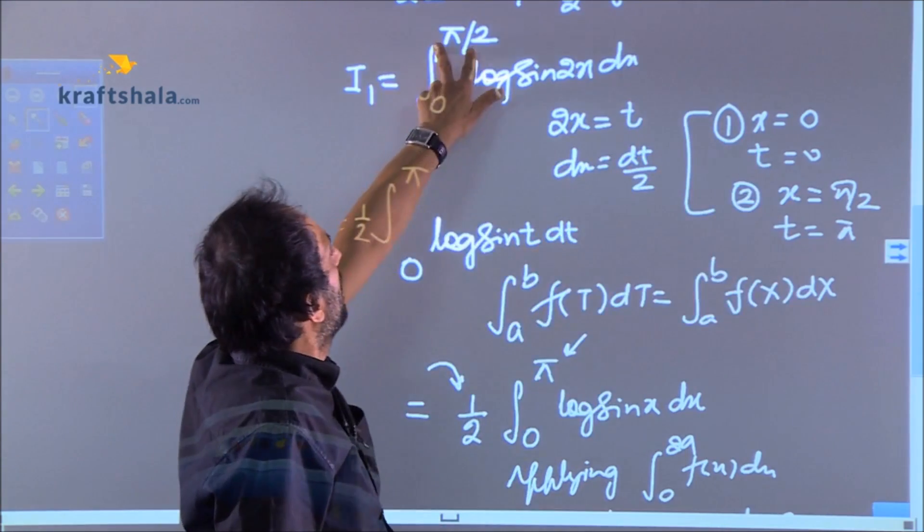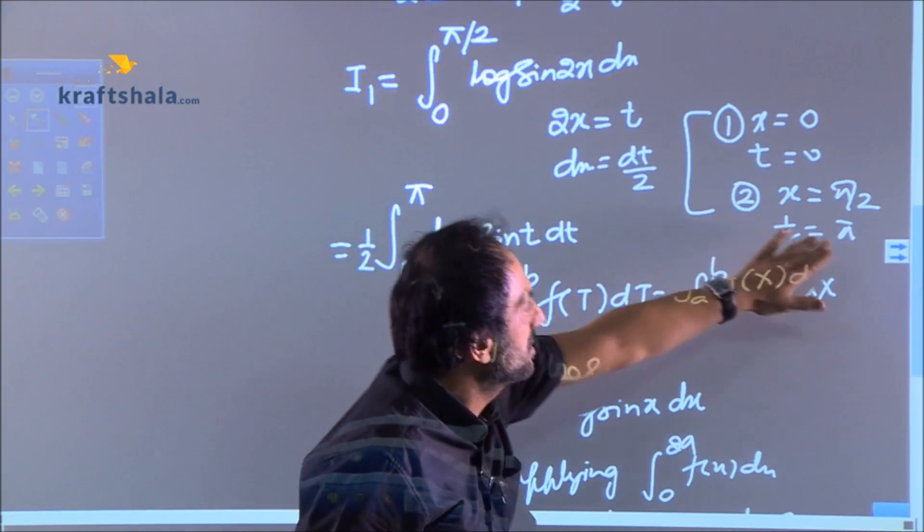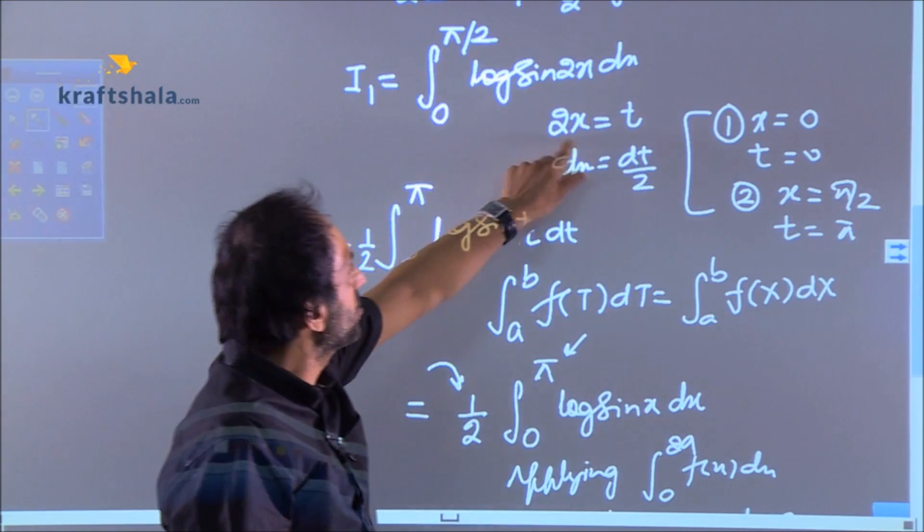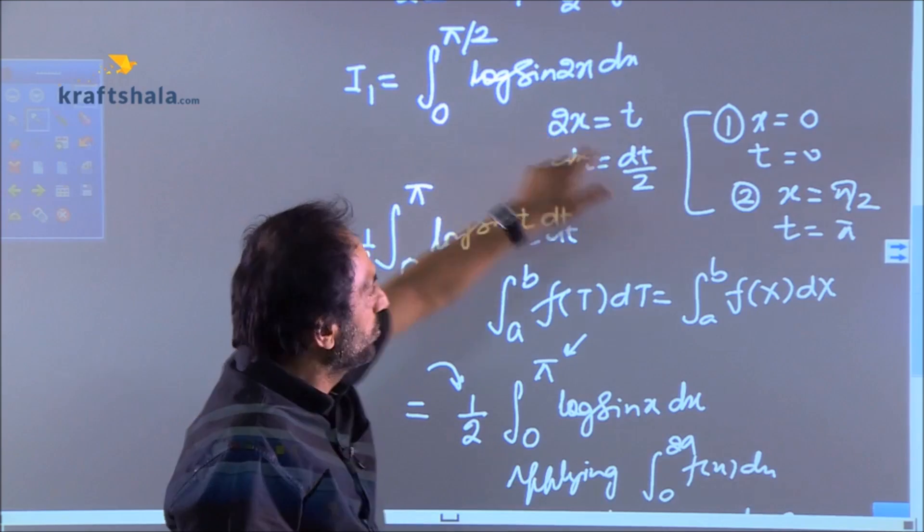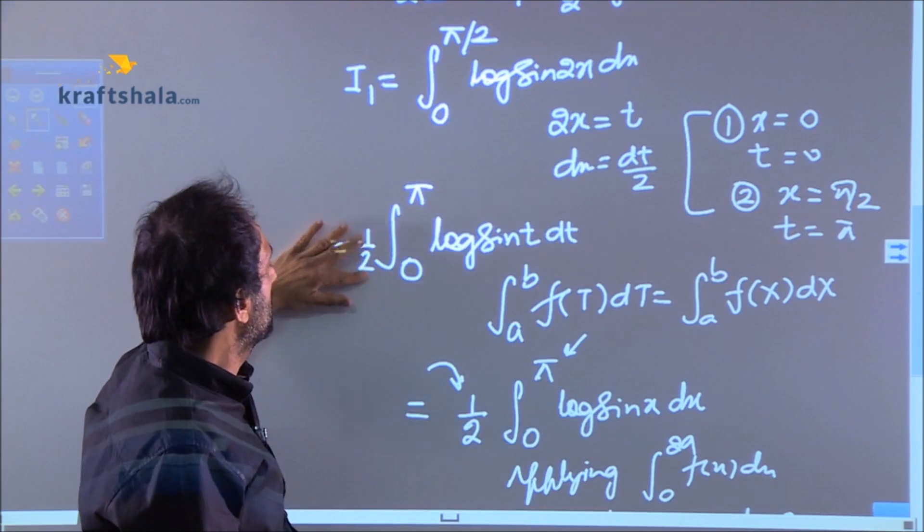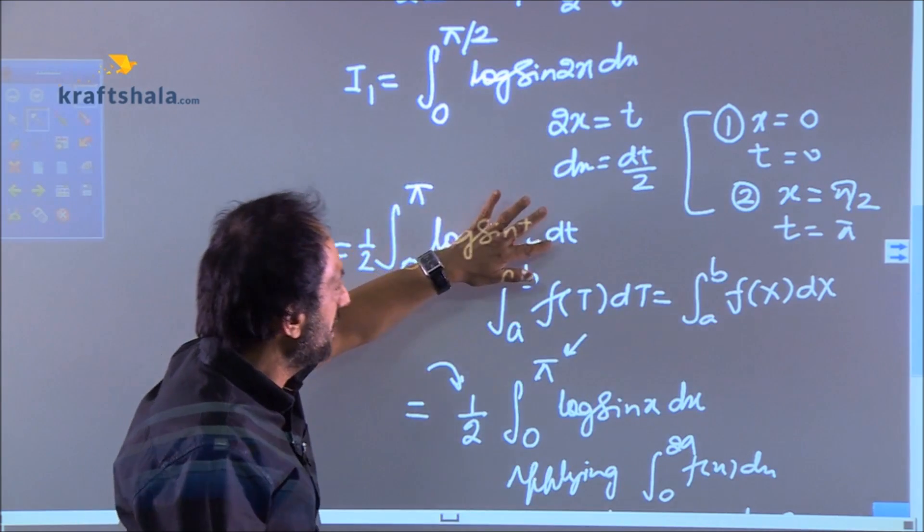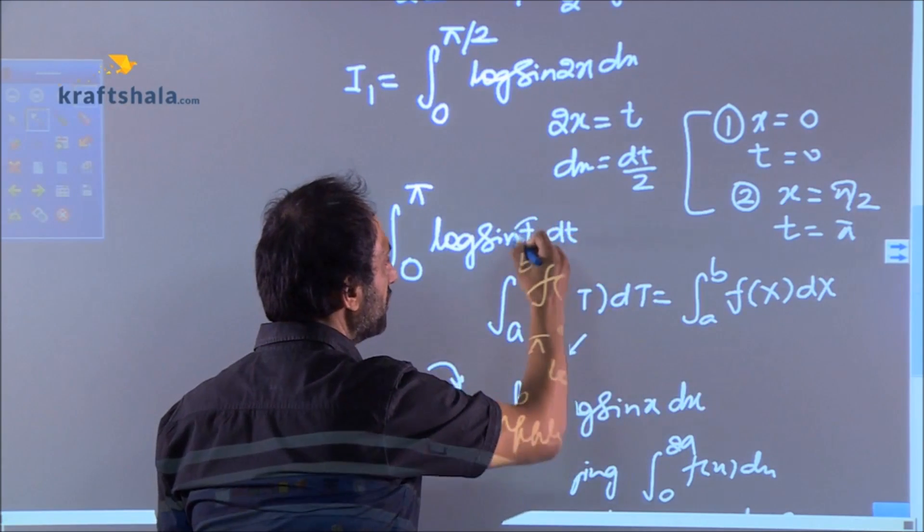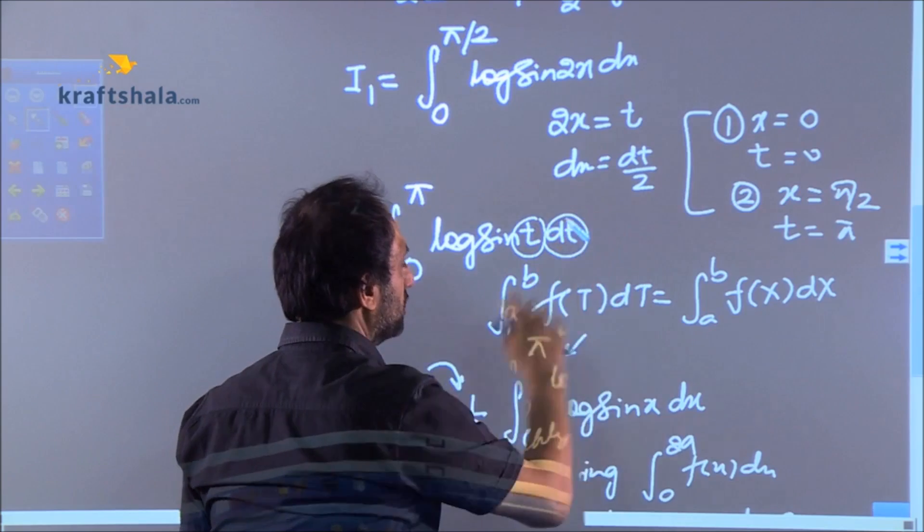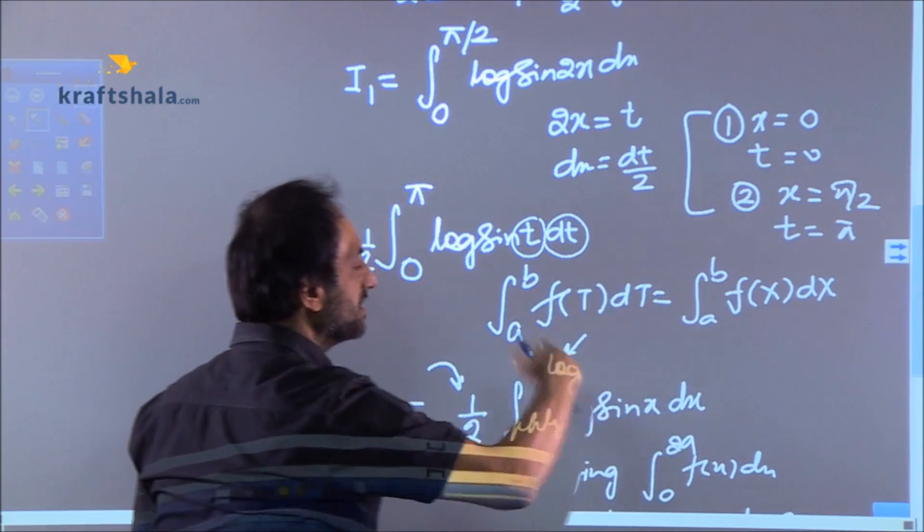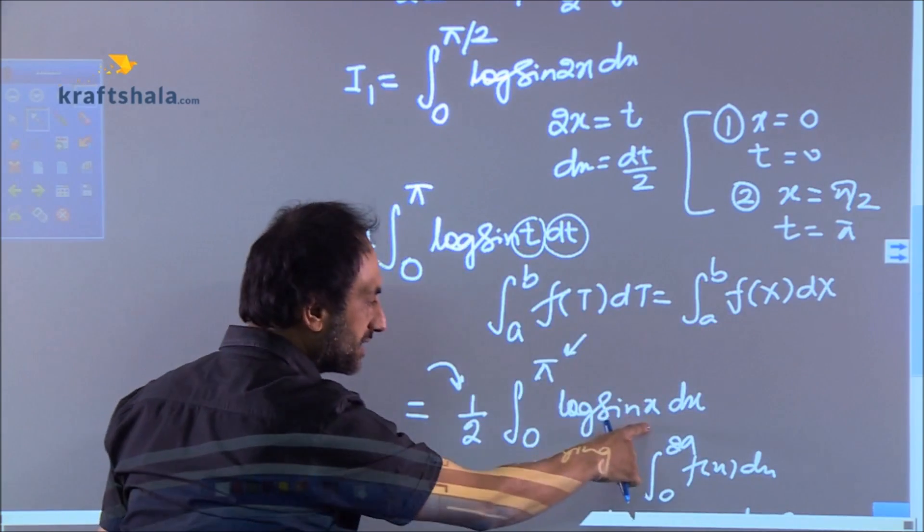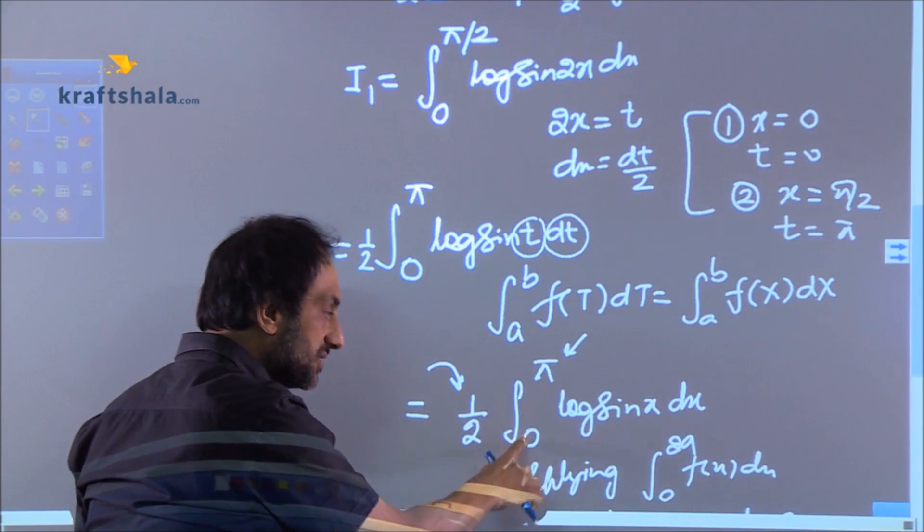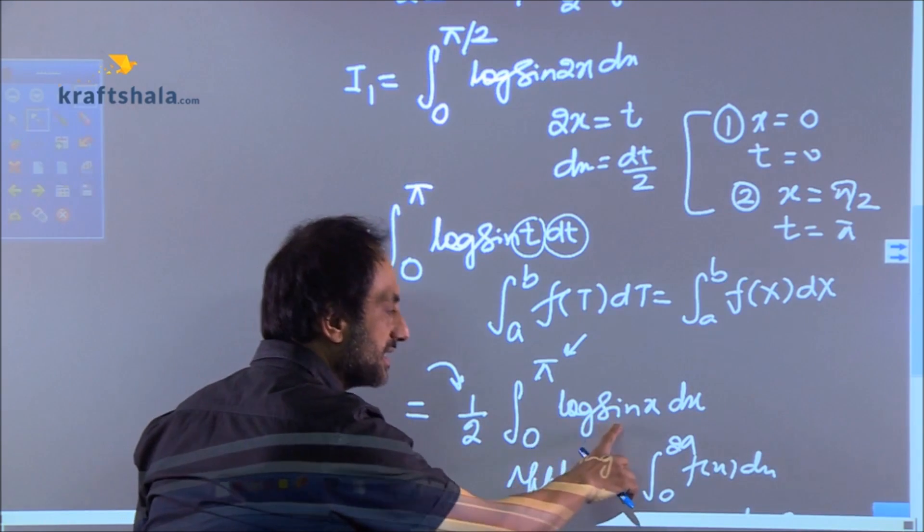The upper limit is π/2. It is t is equal to π because it is 2x. So π/2 into 2 is π. This is 0 to π log sin t dt. This is another property where you can change the variable. So after writing this property you can simply change t to x. So this is 0 to π log sin x dx.